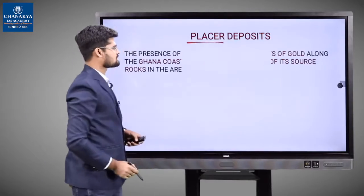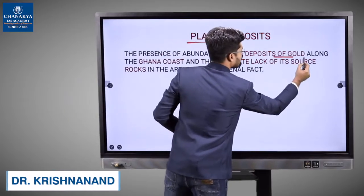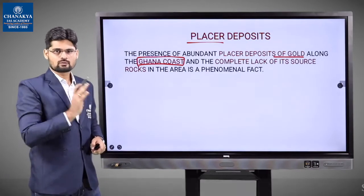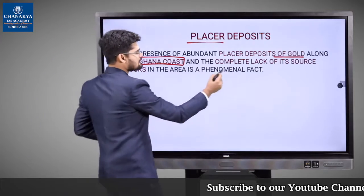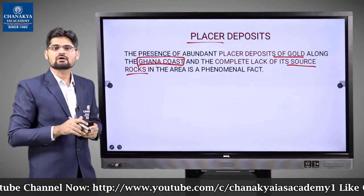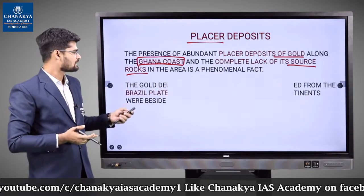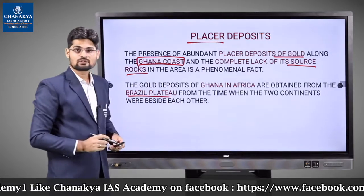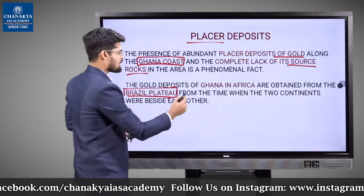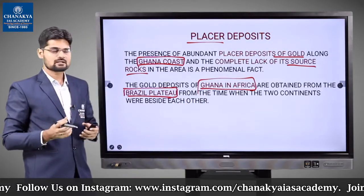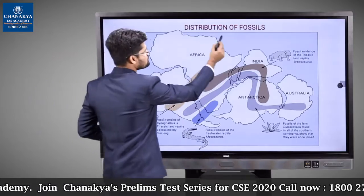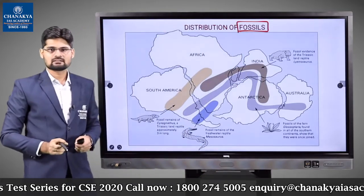The fourth evidence is placer deposits — specifically gold deposits. The Ghana coast in western Africa has gold deposits that completely lack a local source rock. You cannot relate the gold to the nearby rocks. The explanation is that Ghana was once part of the Brazilian Plateau across the Atlantic. Ghana in Africa obtained its gold from the Brazilian Plateau, which is strong evidence that these landmasses were once connected.